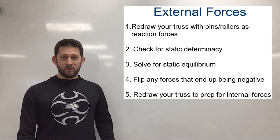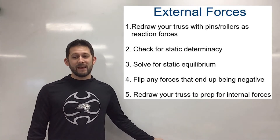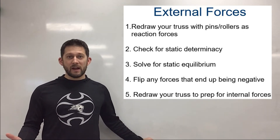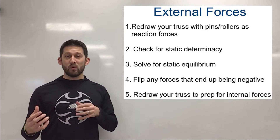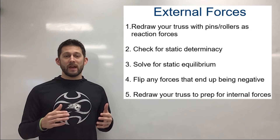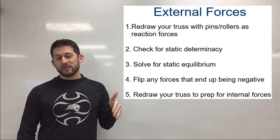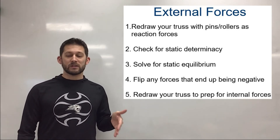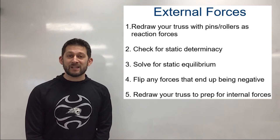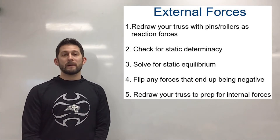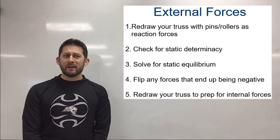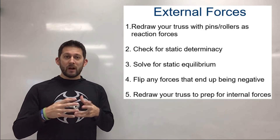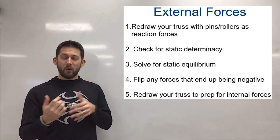When solving for external forces, there are five steps. First, replace the truss's pins and rollers with their reaction forces — a pin provides a vertical and a horizontal force, a roller provides a force perpendicular to the surface. Second, check for static determinacy. Third, solve for static equilibrium. Fourth, let the math tell us if our initial drawing or guesses are correct.